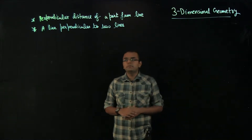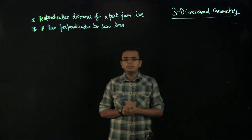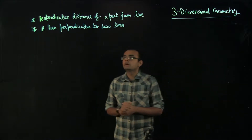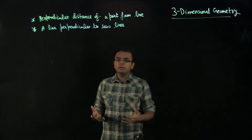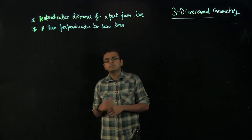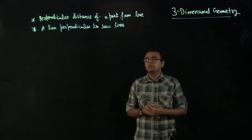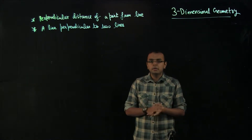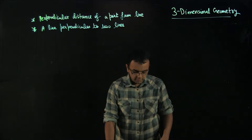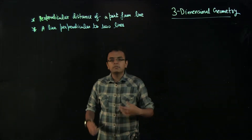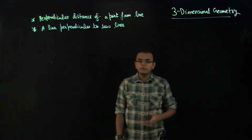Hi everyone. In this video we will be talking about two topics for the 3D chapter for mathematics and IIT-JEE preparation. The topics are finding the perpendicular distance of a point from a line, and finding the equation of a line perpendicular to two given lines. These are small topics, but the approach you learn here is important for solving problems like these.